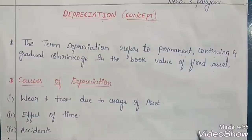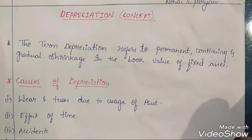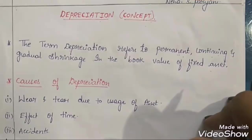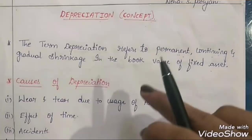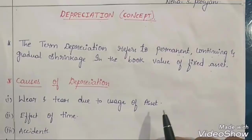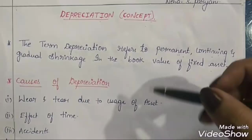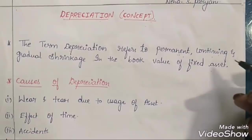Let's take an example. Assume that we have purchased a fixed asset like machinery. We purchased machinery in the year 2016 by paying Rs. 3 lakh. We go on using the machinery for production purposes, and after some years — like in 2018 — when you want to sell the machinery, will you get the same amount, that is Rs. 3 lakh?